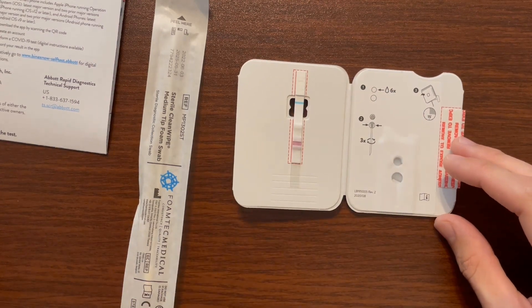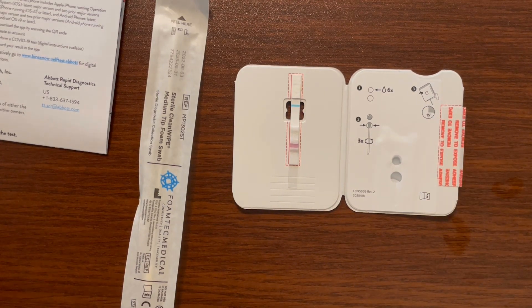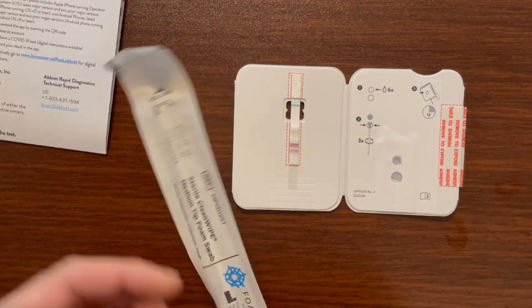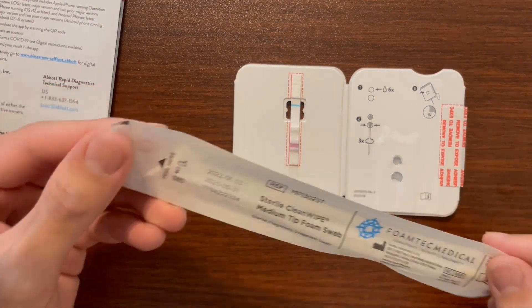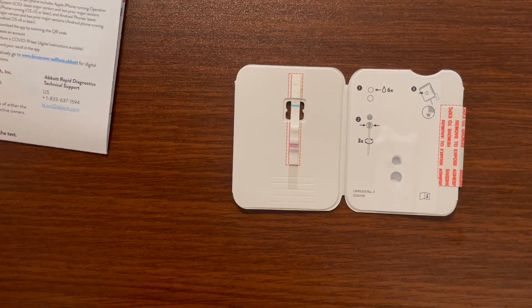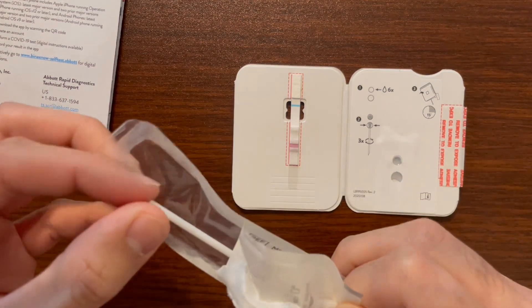Make sure you got the six drops in there and then go ahead and find your swab. Find the end that says peel here, that's going to be away from the tip. Go ahead and open that and take out the swab from this end.